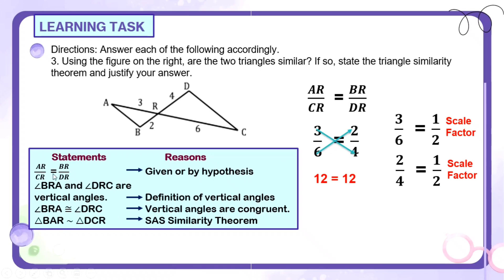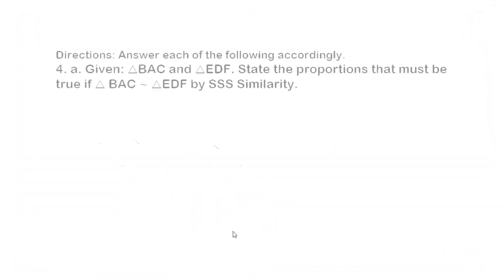Pakita na natin na yung dalawang sides natin ay congruent. Then, itong isang angle, which is itong angle R na to, angle BRA and angle DRC, they are congruent. So meron na tayong dalawang sides and isang angle. Kaya we can say na ang ating ginamit na similarity theorem ay by SAS. Side angle, side similarity theorem. Okay, so they are similar by SAS.